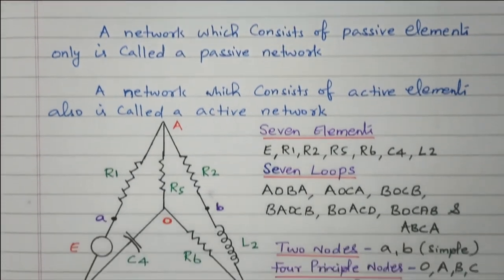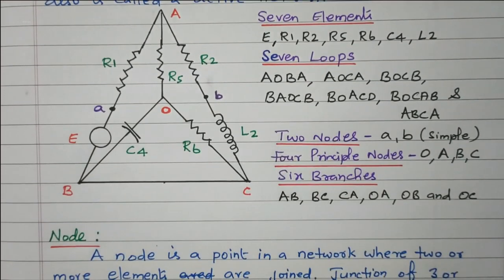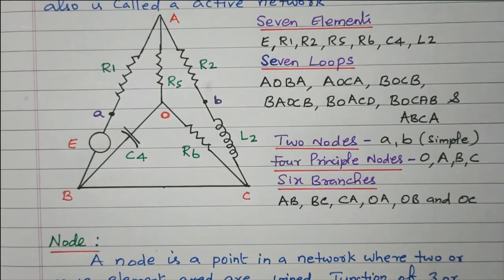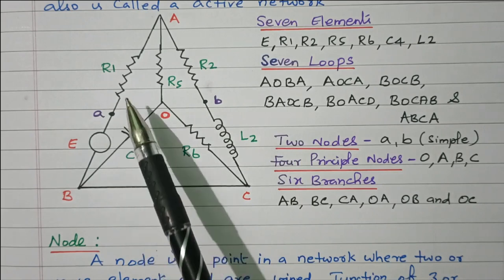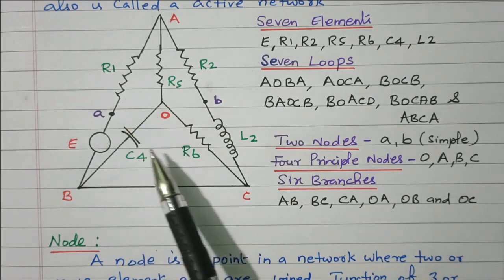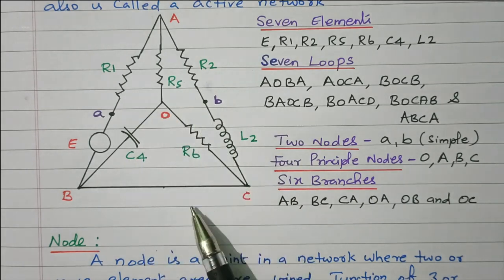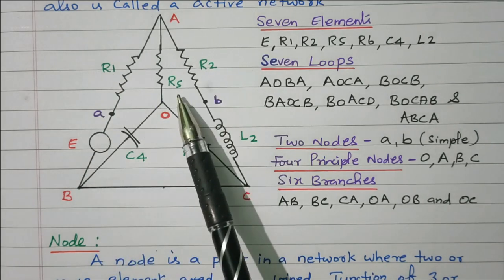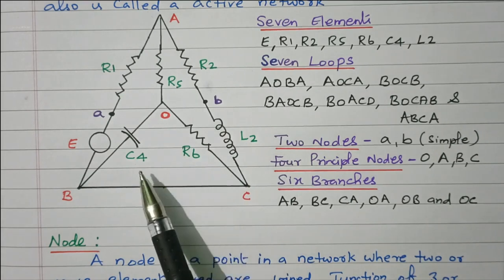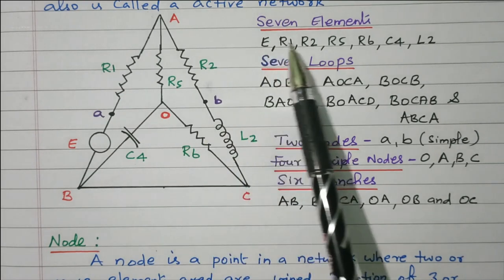Now we will see the network diagram. Here the elements are interconnected: voltage source, resistor, capacitor, and inductor. This is called a network. There are 7 elements available: voltage source, R1, R2, R5, R6, C4, and L2.